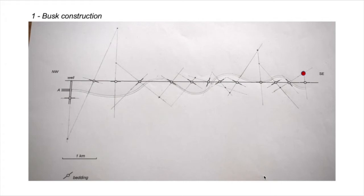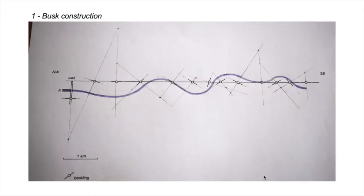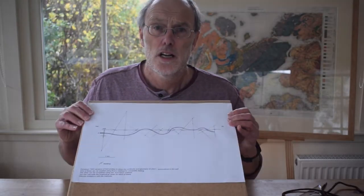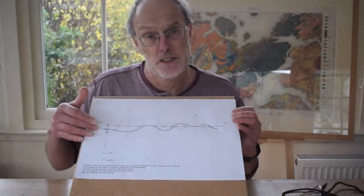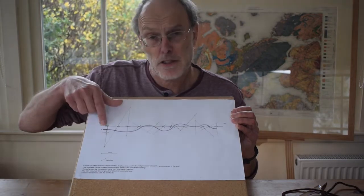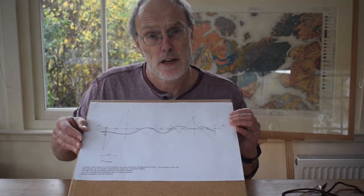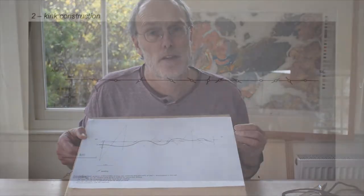We've completed our trace of layer A across the cross-section — colored in so it's more clearly seen. That's our first attempt at this cross-section built using the busk method. Now let's have another go with a clean version and apply the kink band method.